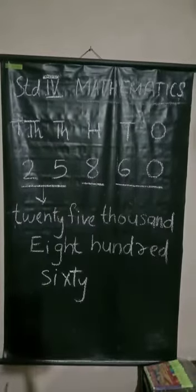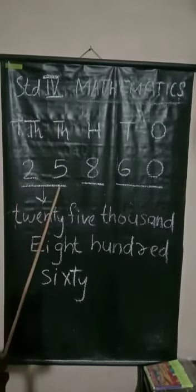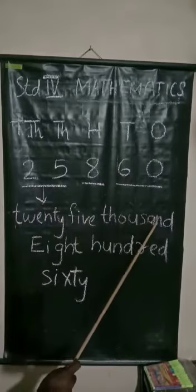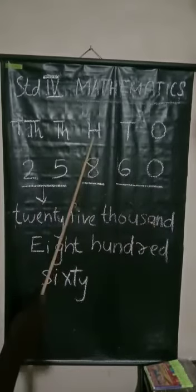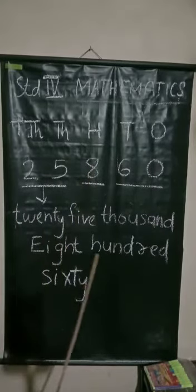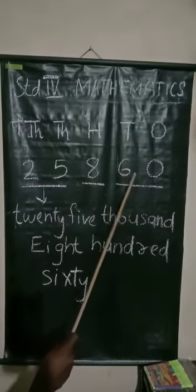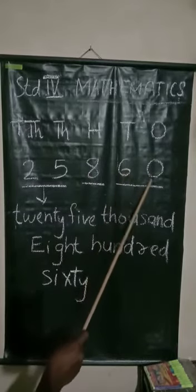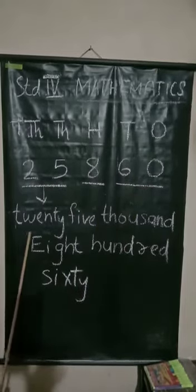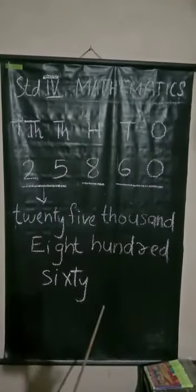So we have the number. How many thousands? Twenty-five thousand. How many hundreds? Eight hundred. And tens and ones make the number sixty. We have the number twenty-five thousand eight hundred sixty.